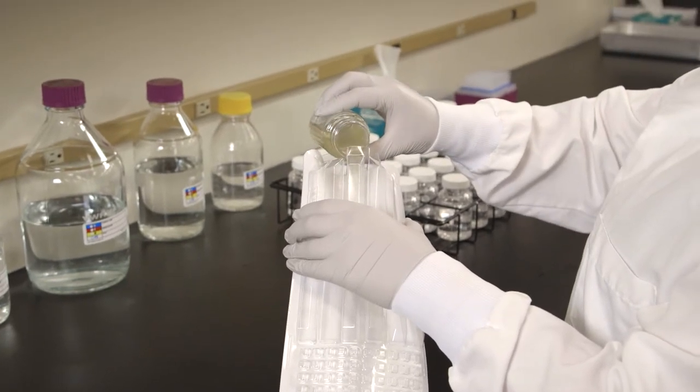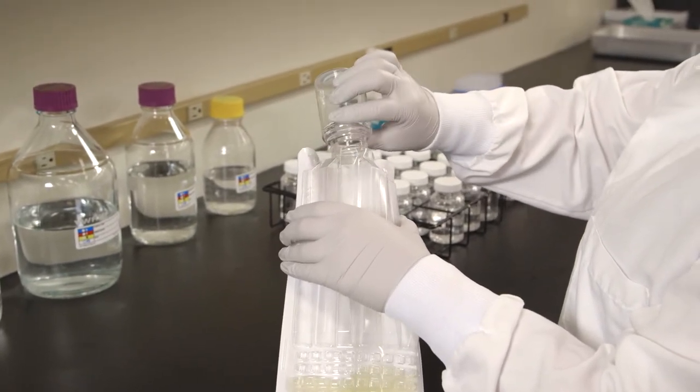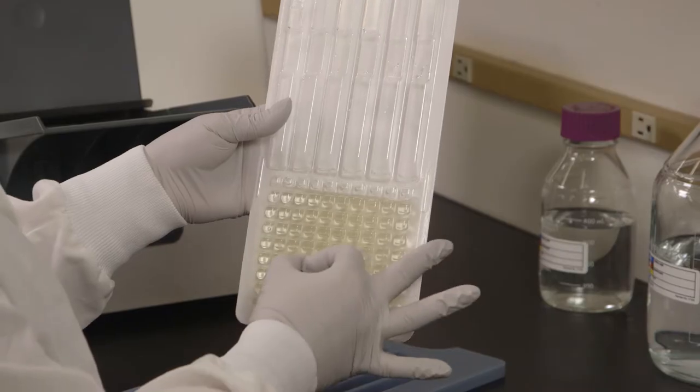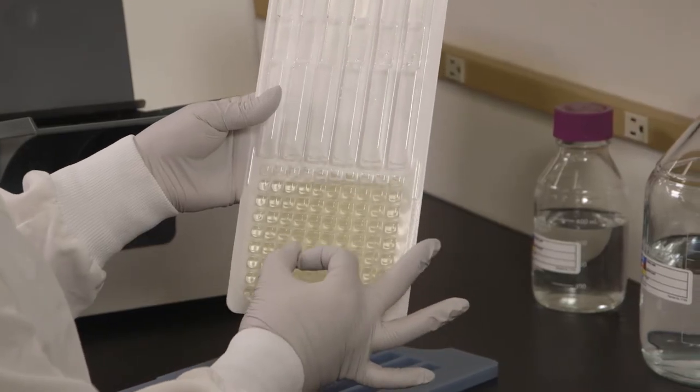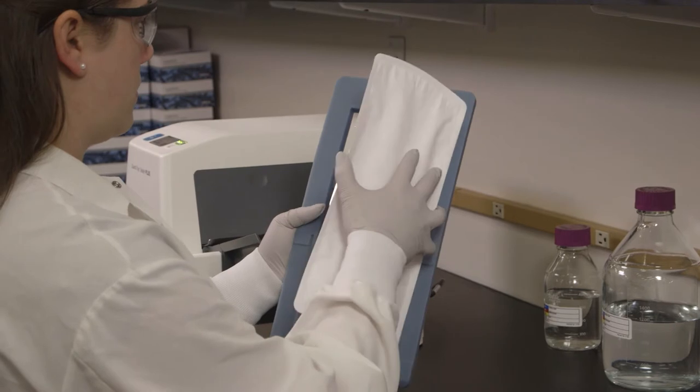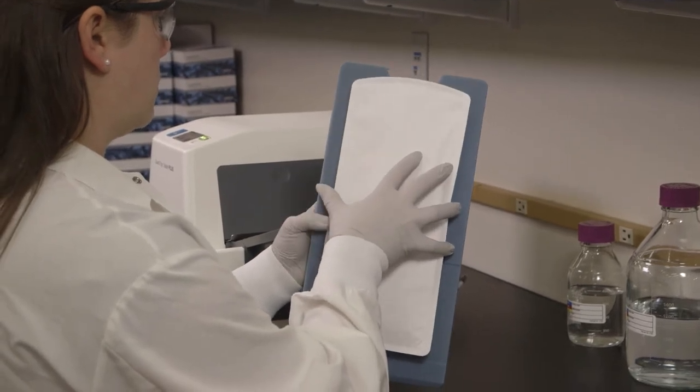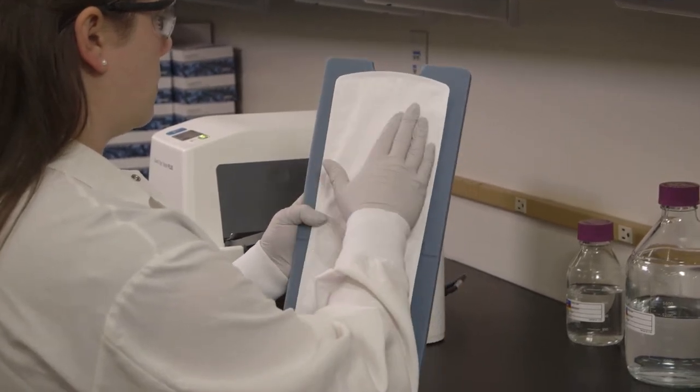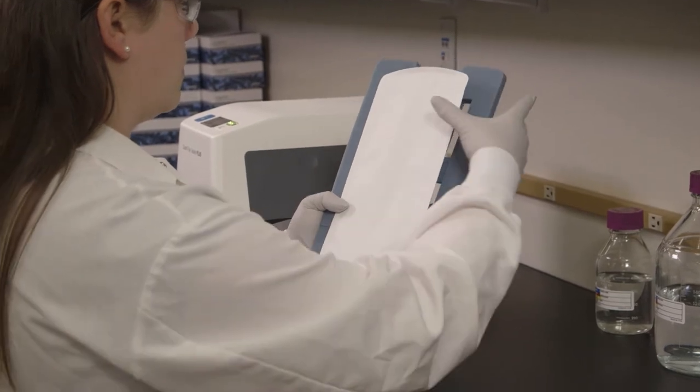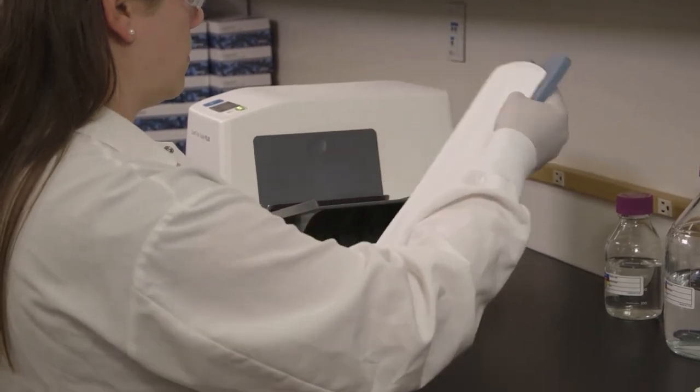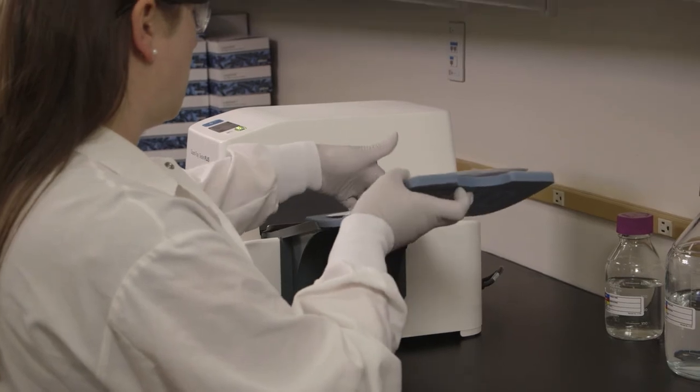Aseptically pour the sample mixture into the tray. Tap or flick the tray to remove air bubbles. Immediately place the filled tray on the rubber insert, making sure each well fits its corresponding hole. Push the insert with tray into the sealer until the sealer grabs the tray and pulls it into the slot.